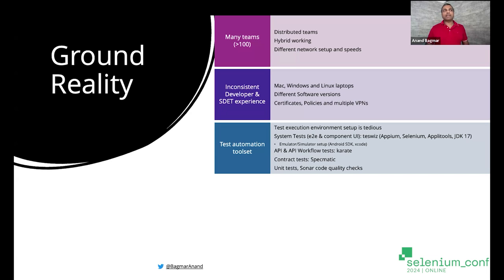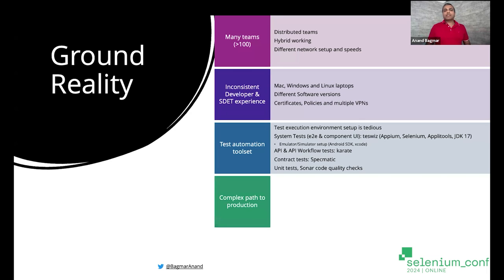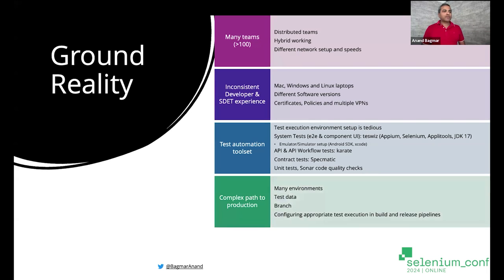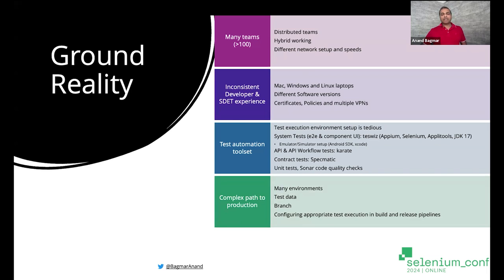That becomes a challenge — how to get that setup consistently across the different types of devices and laptops we work on. There is a very complex path to production, which is not thought of very often. The path to production is very important because you need to understand how many different internal environments there are, how your code goes from the developer machine all the way to production, how to manage test data, what branches exist, and whether you have the appropriate CI pipeline setup.